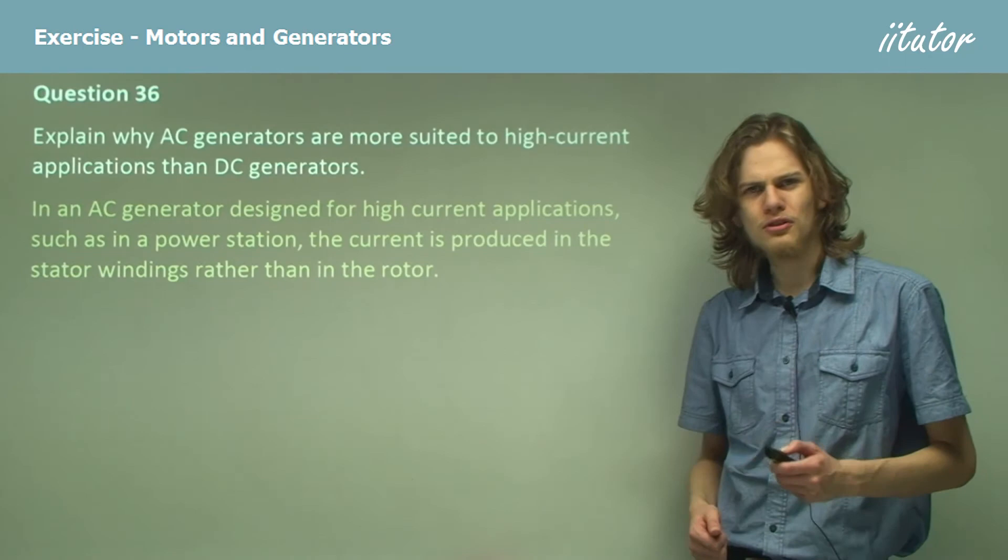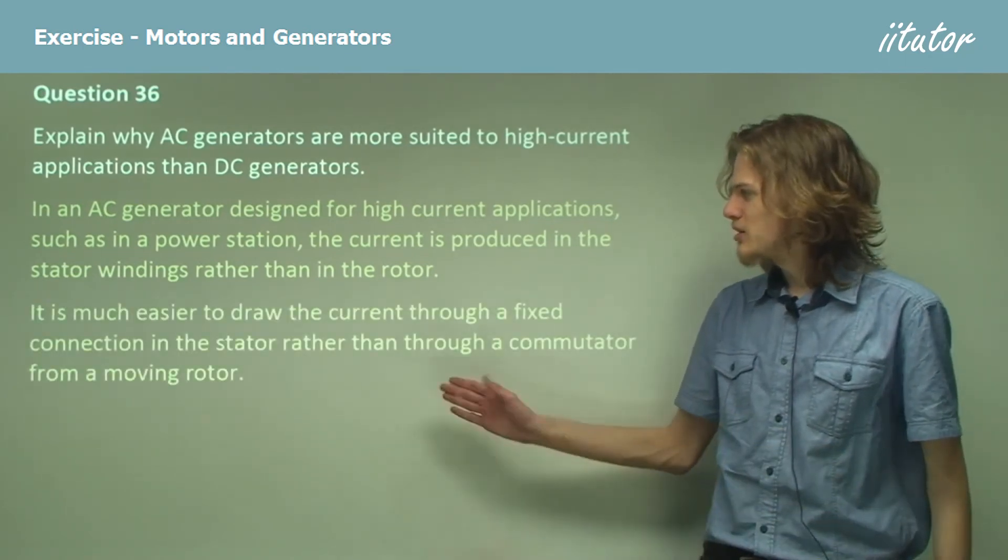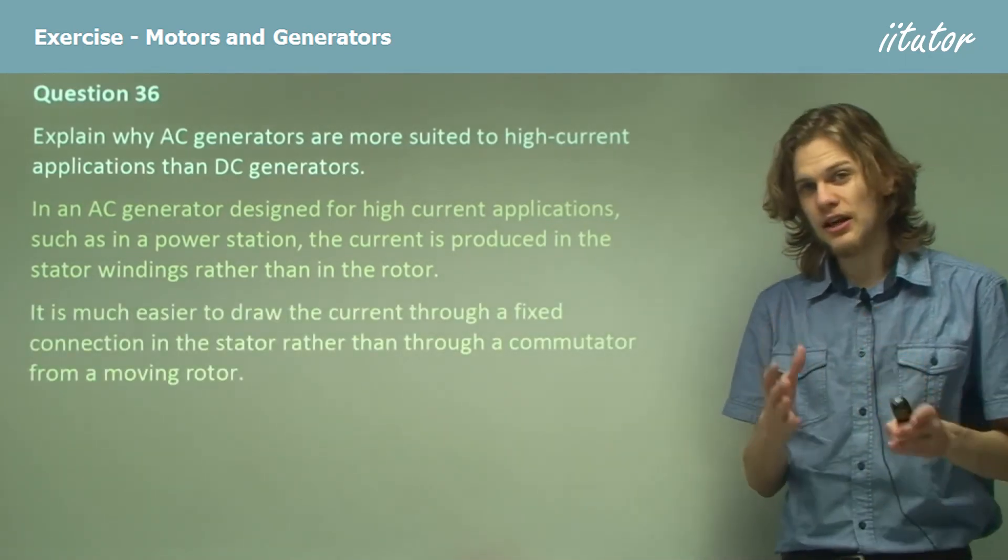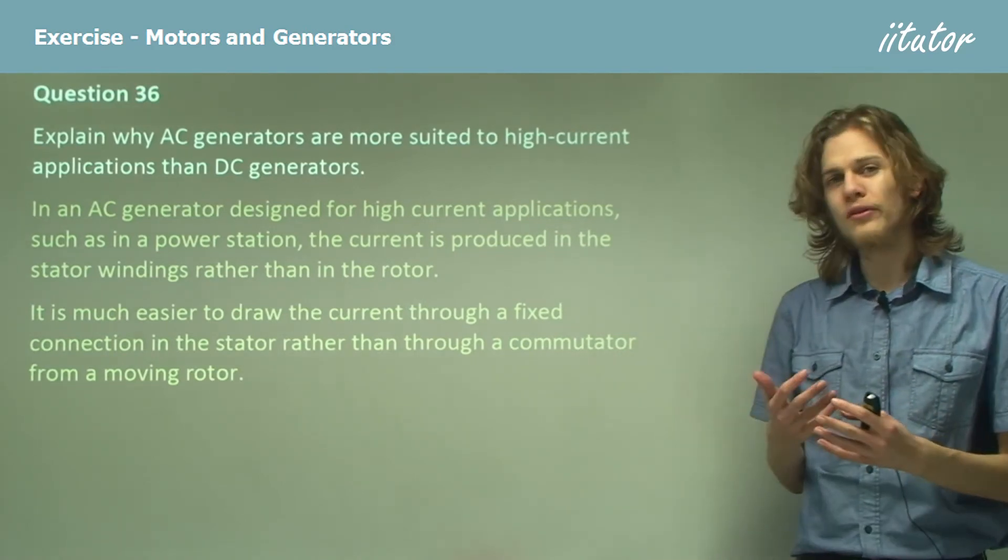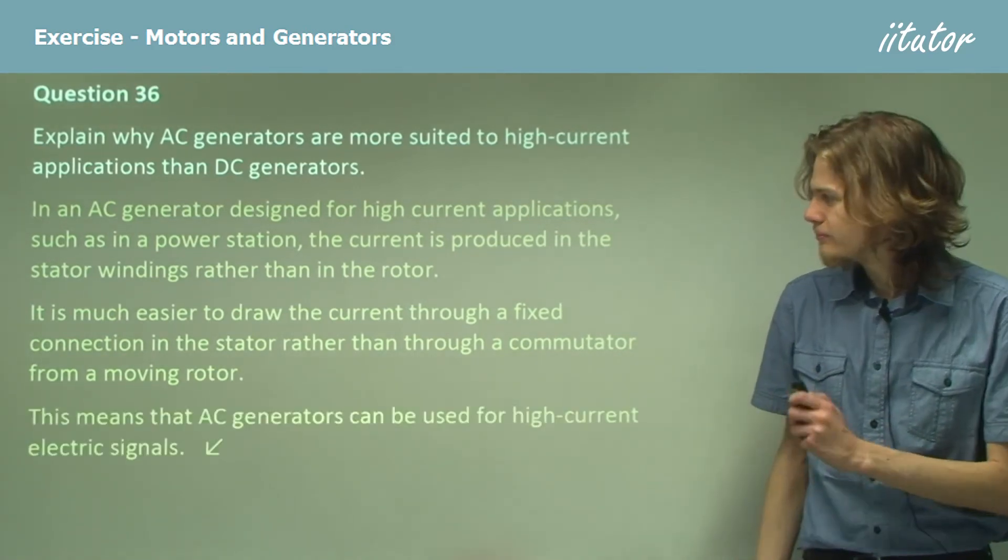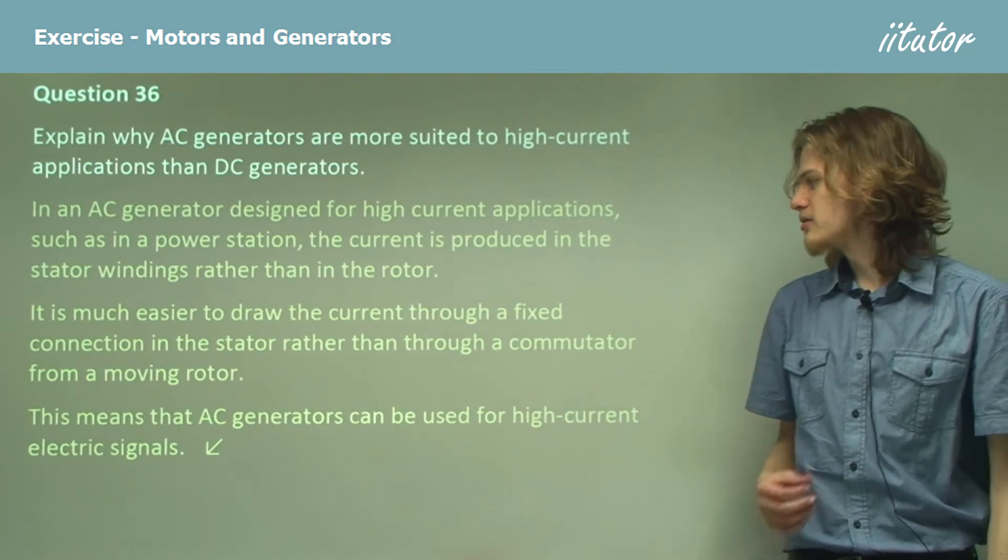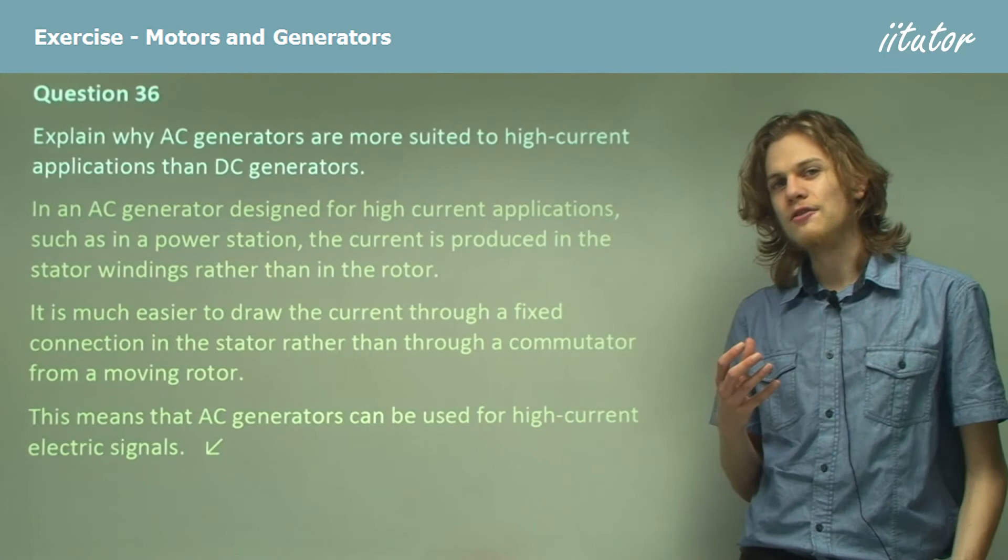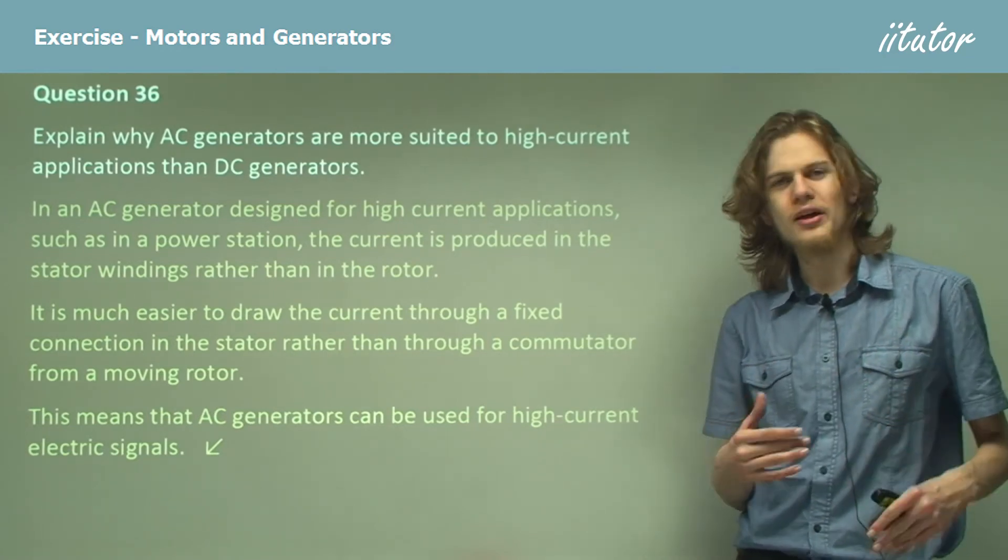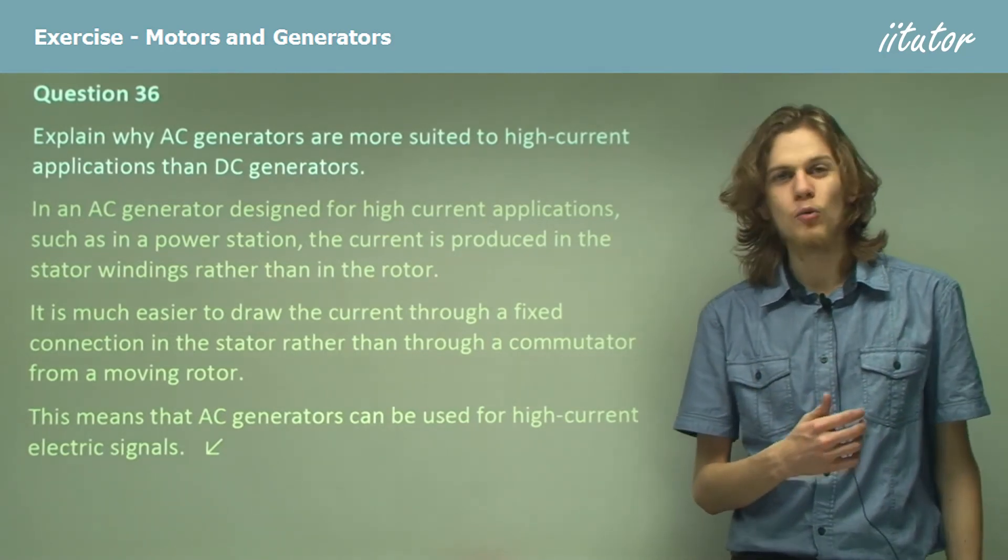It's much easier to draw current through a fixed connection in the stator rather than through a commutator from a moving rotor. This means AC generators can be used for high current applications and are far more useful than DC generators that would produce the same current.